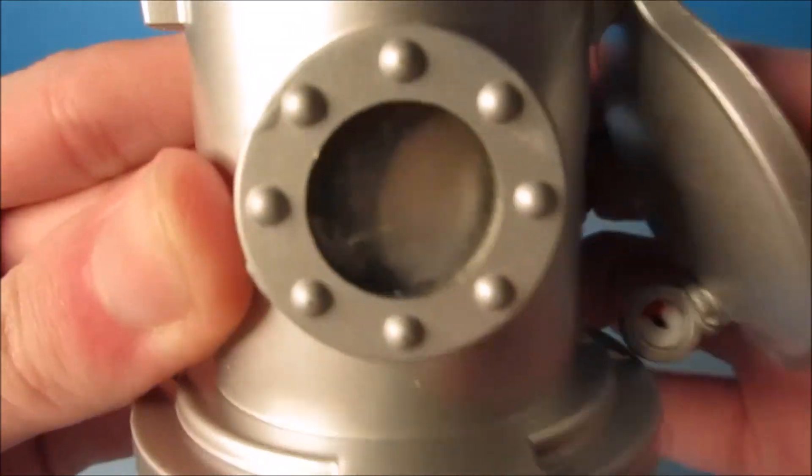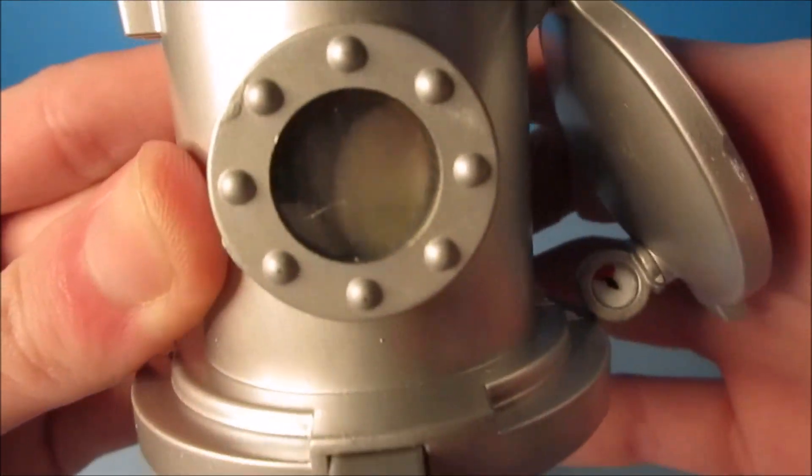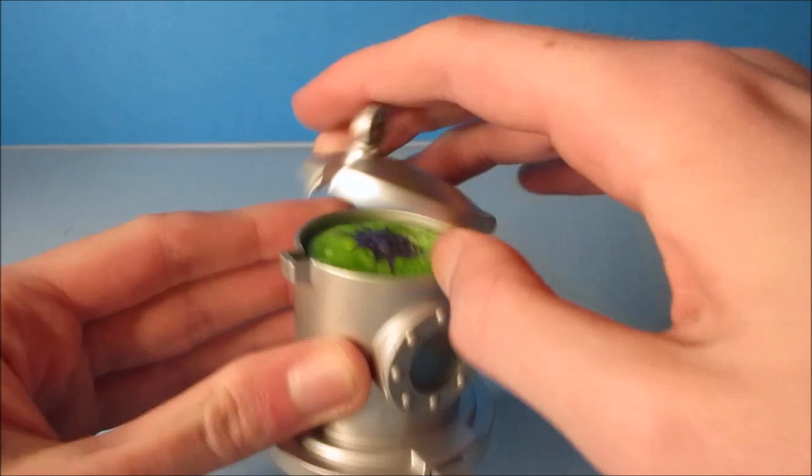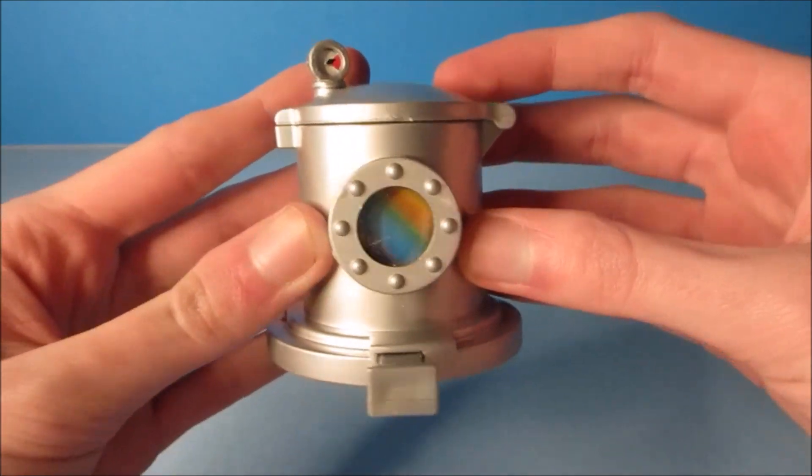You can see up close right here where the glass is. Well, there we go, it's the Flubber tank.